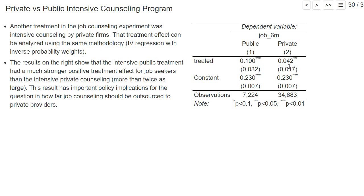This result has important policy implications. Some politicians believe that private companies are much better at placing the unemployed than public officials, but in this experiment, the public employment agency appears to have more than twice as much success when given enough resources to do intensive job counseling. Basic job counseling in the control group is worse than private counseling, but public agencies have many more job seekers to care about — so the main effect seems to be giving employment agency counselors more time per job seeker.